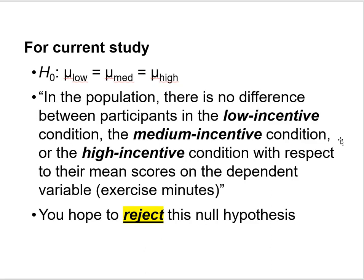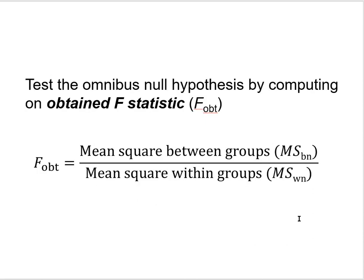For our investigation, the null hypothesis says: mu for the low incentive condition equals mu for the medium incentive condition equals mu for the high incentive condition. In verbal terms: in the population there's no difference between participants in the low, medium, or high incentive conditions with respect to their mean scores on the dependent variable, exercise minutes. As is usually the case, you hope to reject this null hypothesis. We test it by computing an obtained F statistic, represented by uppercase F with an OBT subscript.